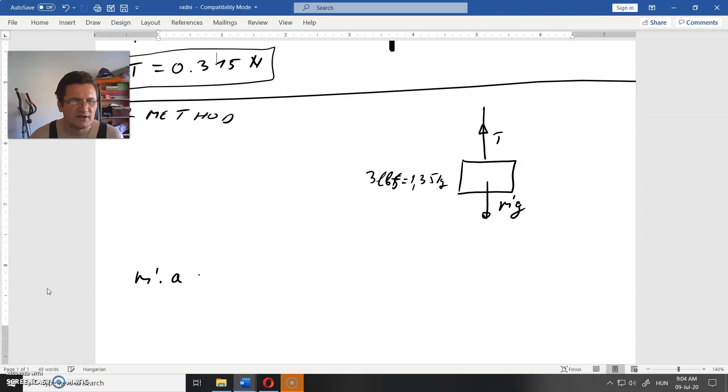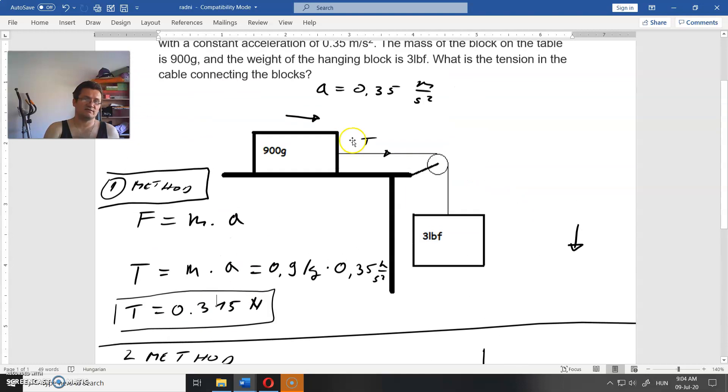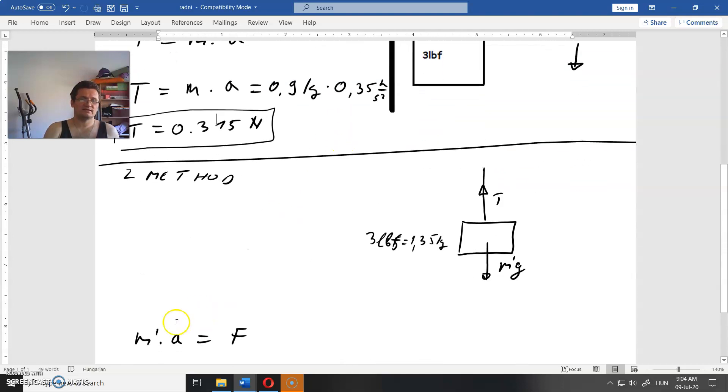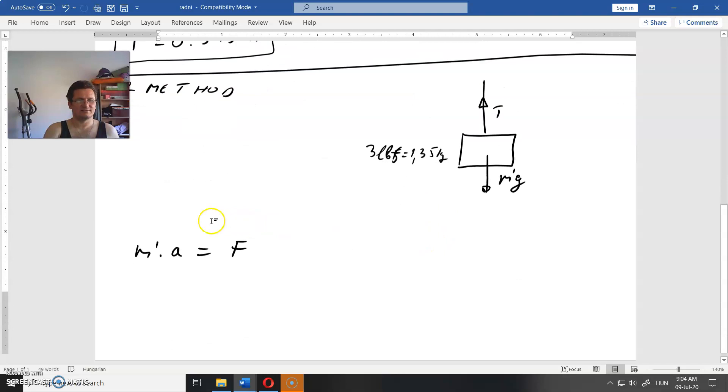We will place here some kind of M prime. M prime times acceleration equals the sum of all forces exerted on it. This acceleration is given to us, that is nice. This mass is given, also nice. Because it moves downwards, M prime times A equals M prime times G minus T.